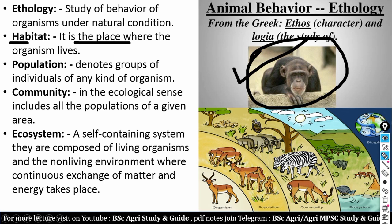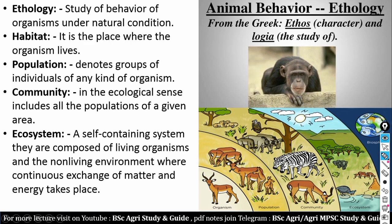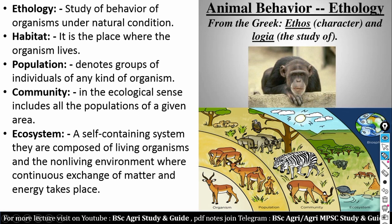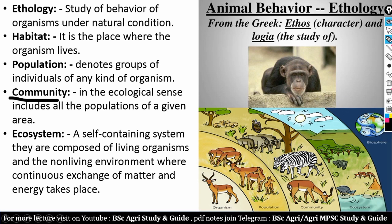Next is habitat — the place where an organism lives, meaning the original place of that organism. Next is population — it denotes a group of individuals of any kind of organism. Next is community — in the ecological sense, it includes all the populations of a given area.